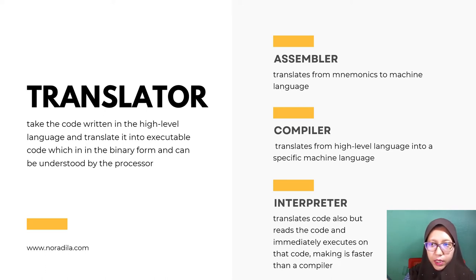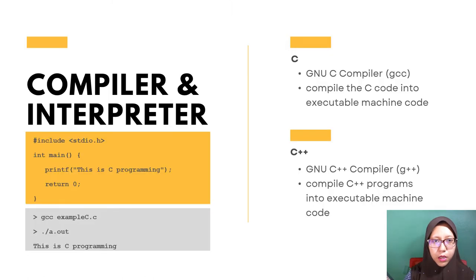With a compiler, if the source code contains errors, the programmer would need to recompile the code. The compiler and interpreter might be different for different programming languages.